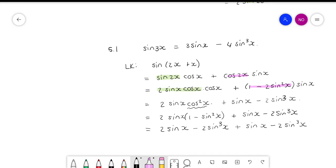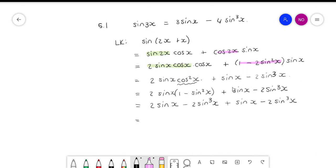Okay, and do you see, if I now add my similar terms together, then I'm at my answer. Because 2 sin x plus sin x is 3 sin x, and then I have negative 2 and negative 2, which gives negative 4 sin to the power of 3x.